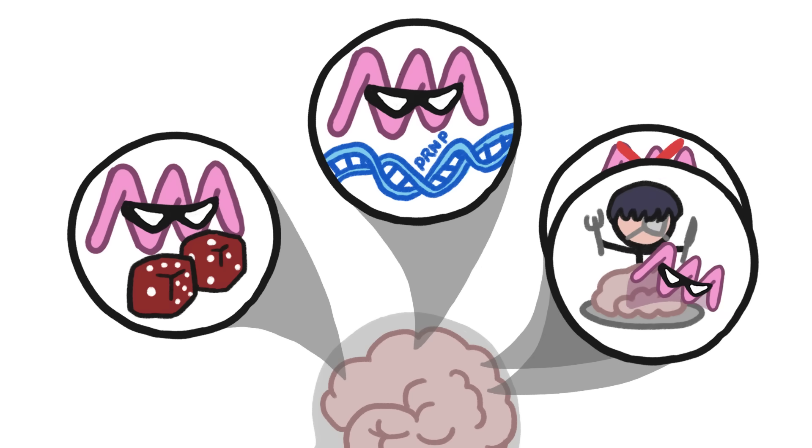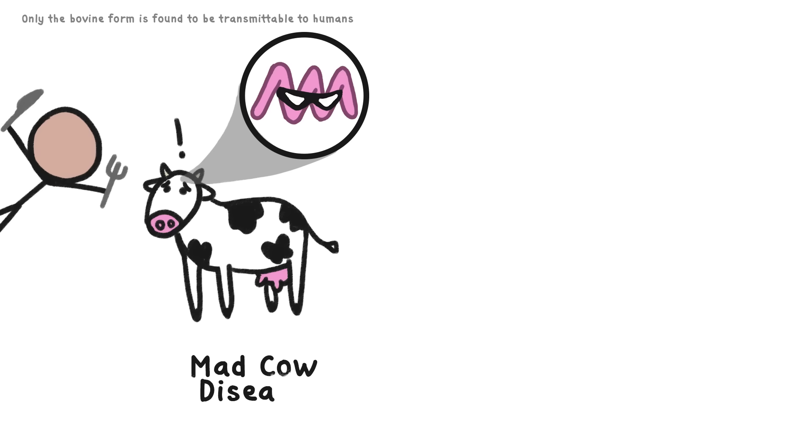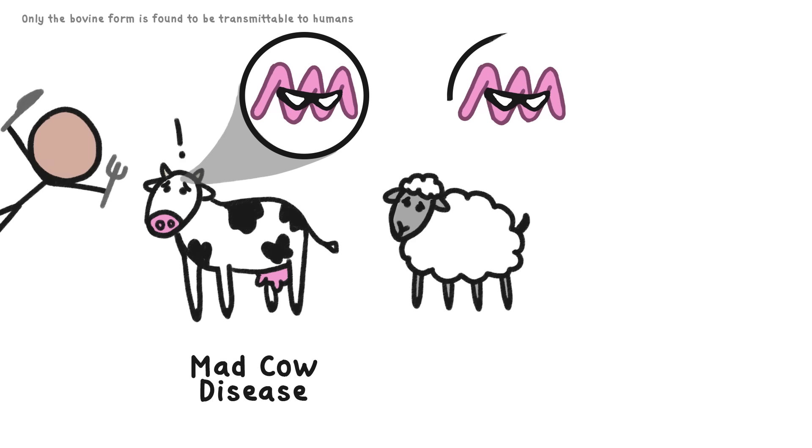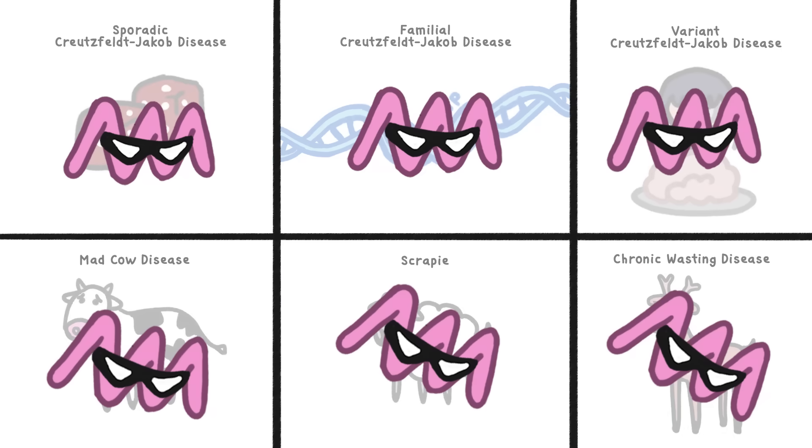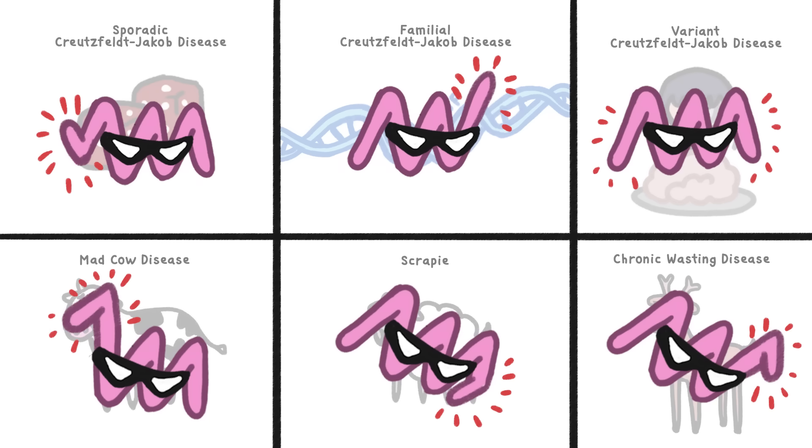And that can indeed happen! Normally with cows infected with mad cow disease, which is the bovine form of Creutzfeldt-Jakob disease. Sheep can also get it. Then it's called scrapie. And in deer, it's chronic wasting disease. In each of these diseases, it's the same brain protein that's the culprit, but it's misfolded in a slightly different way.